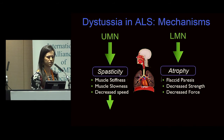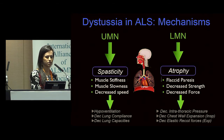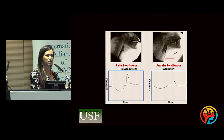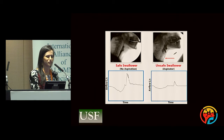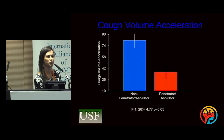Due to spasticity from upper motor neuron degeneration, there is hyperventilation and decreased lung compliance and capacities. Concomitantly, atrophy from lower motor neuron involvement leads to decreased intrathoracic pressures, decreased chest wall expansion — important for inspiration — and decreased elastic recoil forces, important for expiration. At the University of South Florida we've compared objective voluntary cough spirometry in ALS patients with safe airway protection versus those who aspirate, finding that those who penetrate or aspirate have half the cough volume acceleration levels.